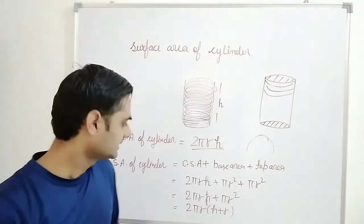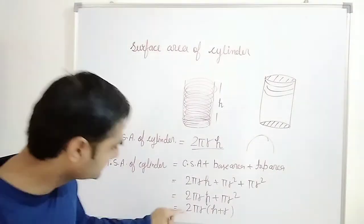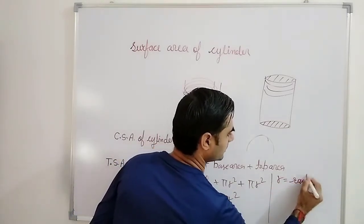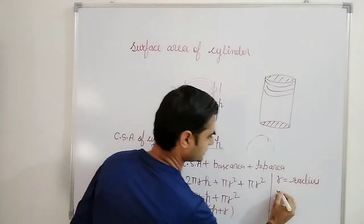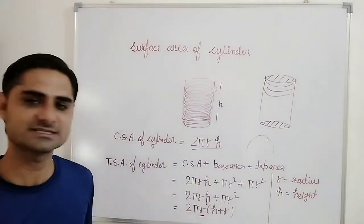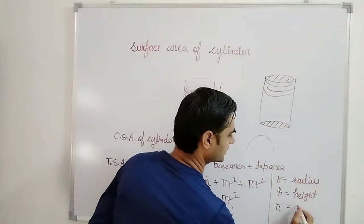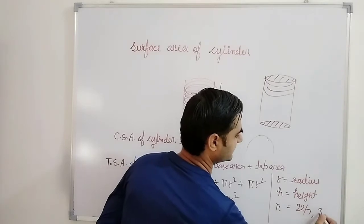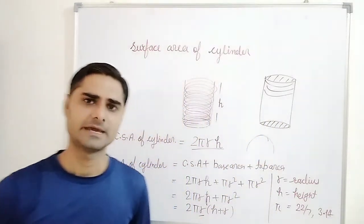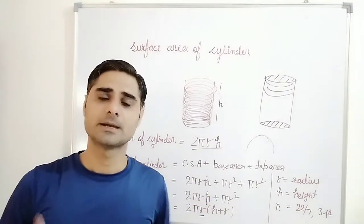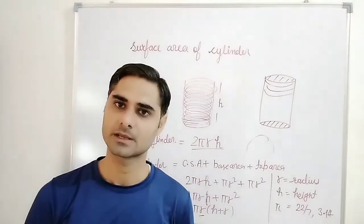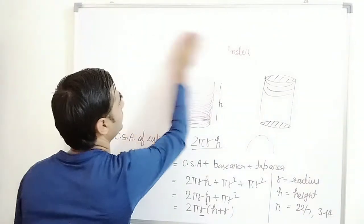This is the total surface area of a cylinder. In this formula: r is equal to radius, h is equal to height, and pi — you know very well — the value of pi is generally 22/7, and sometimes it is given as 3.14. If it is given, use the same; if not, use 22/7. This was the curved surface area. Now we will solve some problems related to this formula.